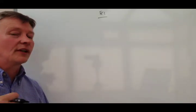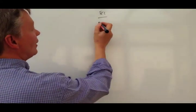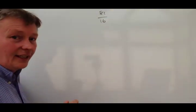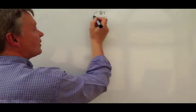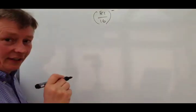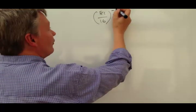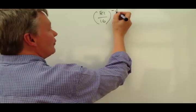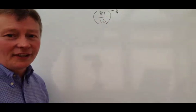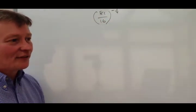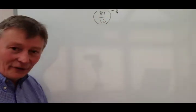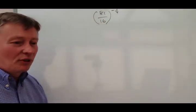I've got 81 over 16, and that's going to be to the power of minus three over four. Now, any time you see a minus in these sorts of things, firstly you're dealing with a reciprocal, so you've got to flip it around the other way.